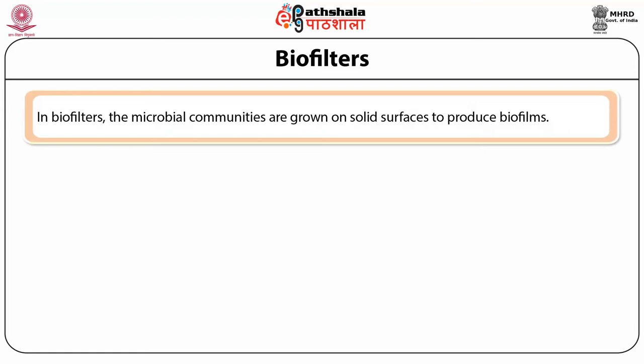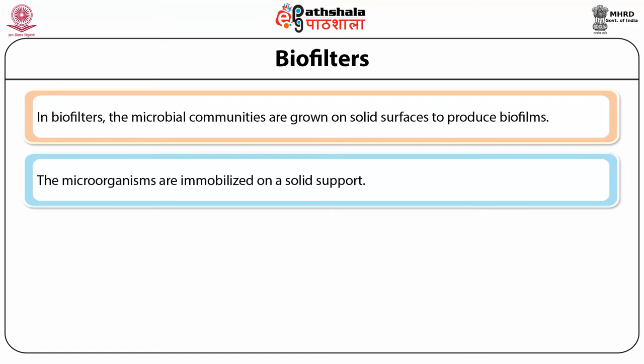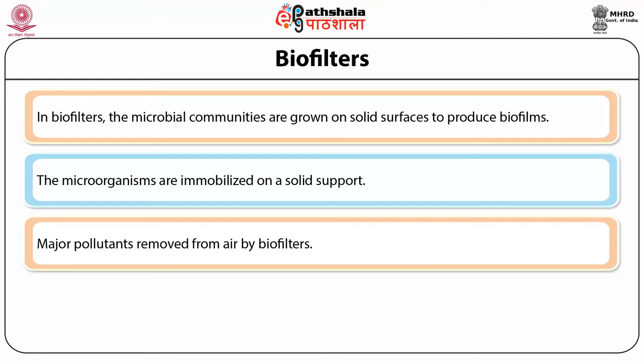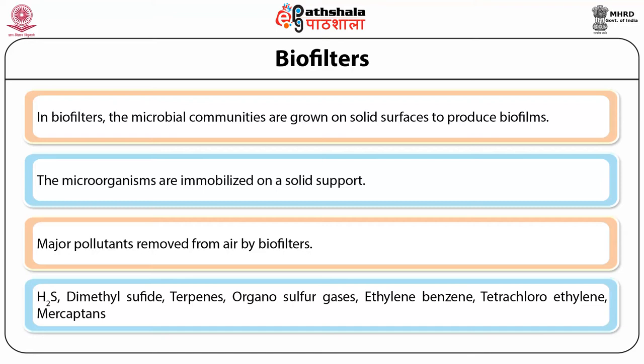In bio-filters, microbial communities are grown on solid surfaces to produce bio-films. When a gas stream containing organic pollutants is passed through these systems, the pollutants are adsorbed onto the bio-film. The microorganisms are immobilized on a solid support, and classical bio-filters use compost, soil, bark, peat, etc. as filter media.